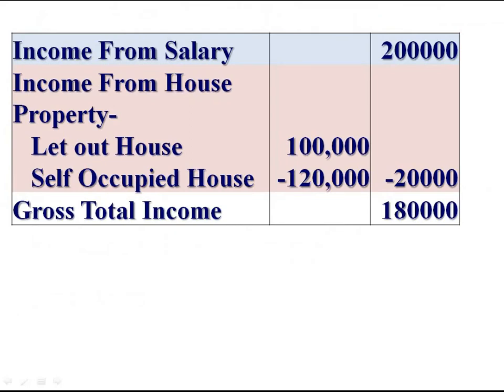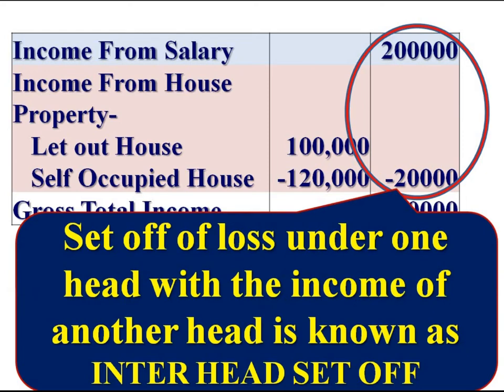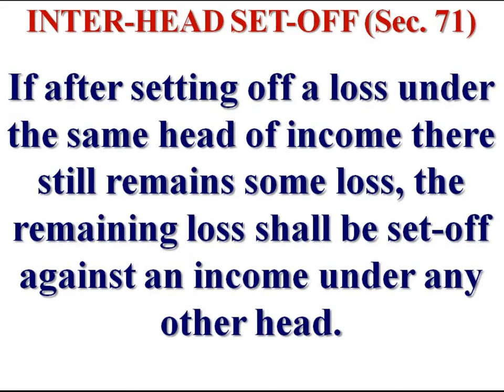After intra-head set-off, if there is any remaining loss, such loss can be set-off with the income of other heads. For example, the loss from house property can be set-off with income from salary. The loss under one head is set-off with income of other heads — this is known as inter-head set-off. After intra-head set-off, if there is remaining loss, it can be set-off with income of other heads. This is the inter-head set-off under Section 71.